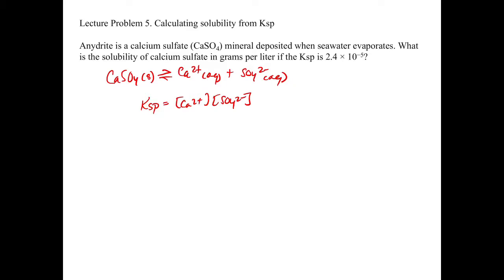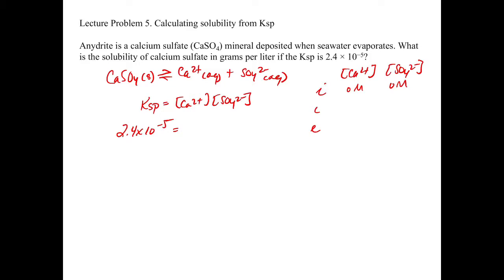The reason why we need an ICE table is because they give us the KSP, which is 2.4 times 10 to the minus 5. So if we can get variables for calcium 2+ and SO₄²⁻, we can plug that in and solve for X to get the concentrations. We start with zero molar and zero molar, because there's no indication of any pre-existing concentrations of either ion. When you first put the solid in, it hasn't dissolved yet, so you get zero molar and zero molar.